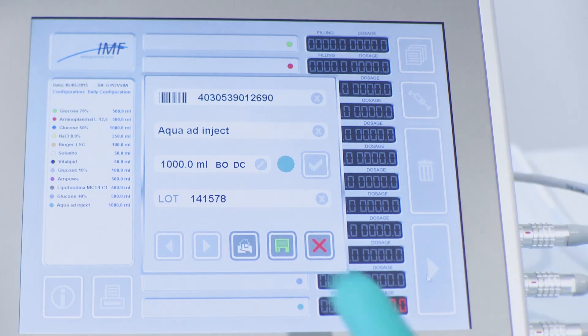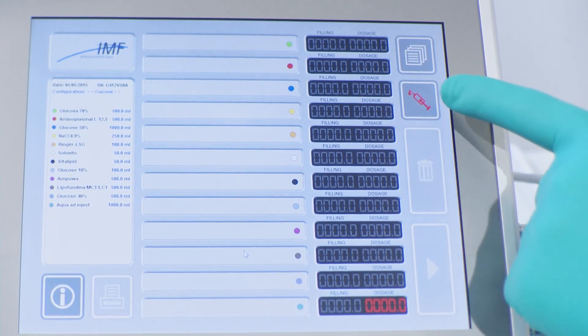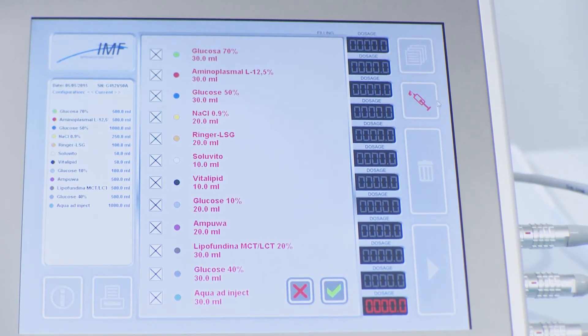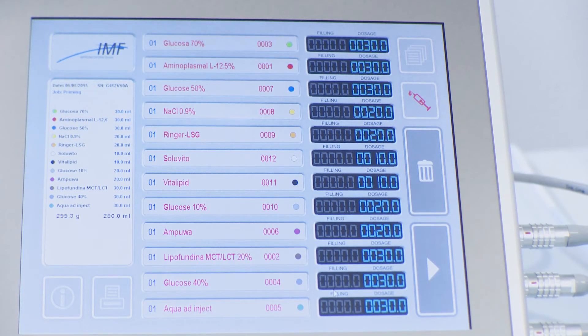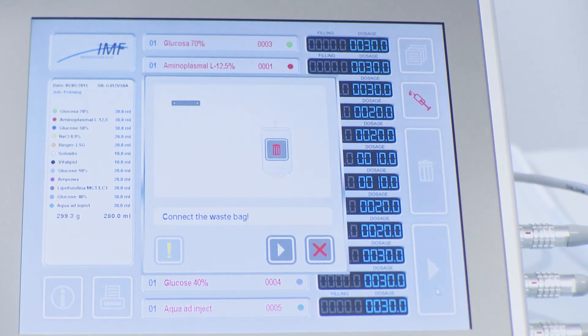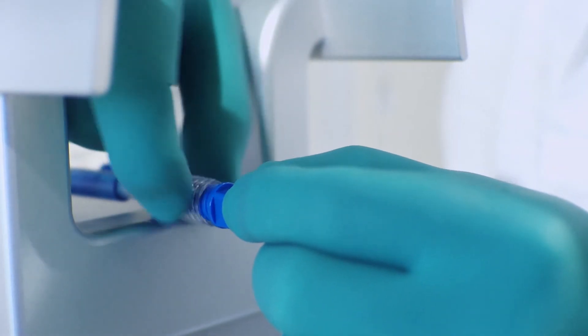When all ingredients are connected and verified, the operator can confirm the setup is completed correctly. This will allow the display of another button for the procedure of priming for all the lines used on the Medimix multi-compounder. Press the button, confirm and ensure that the waste bag is attached to the Medimix multi-compounder.